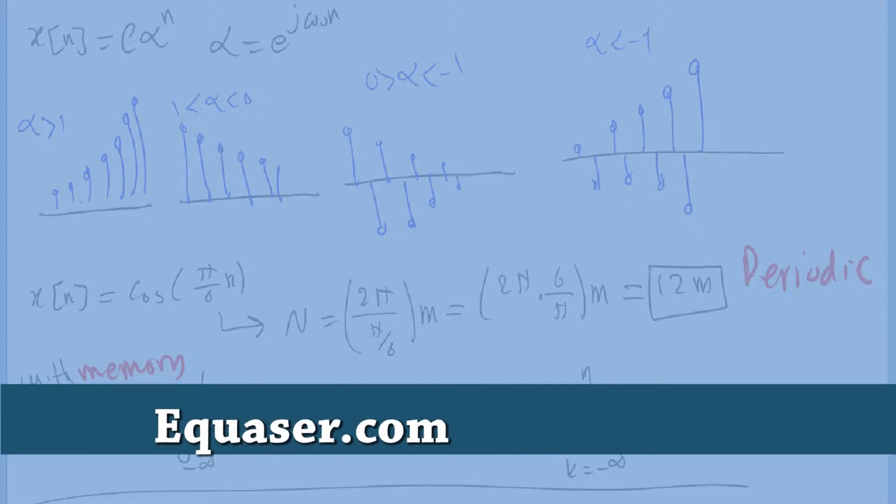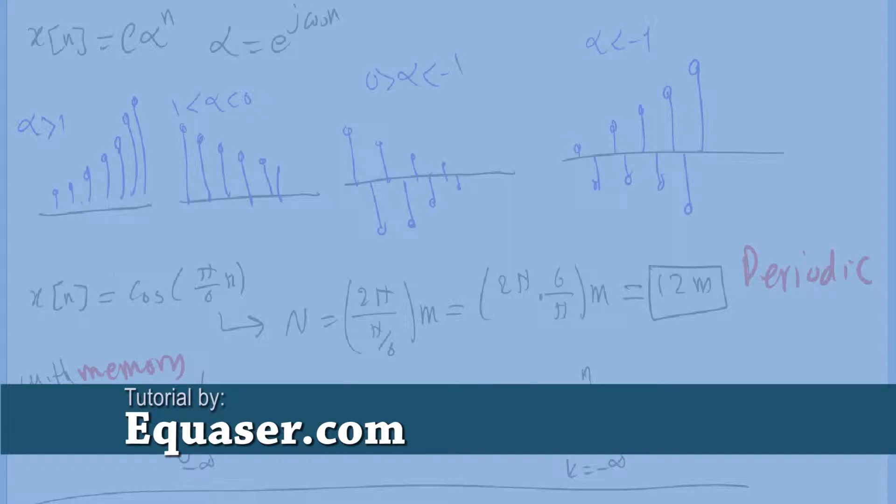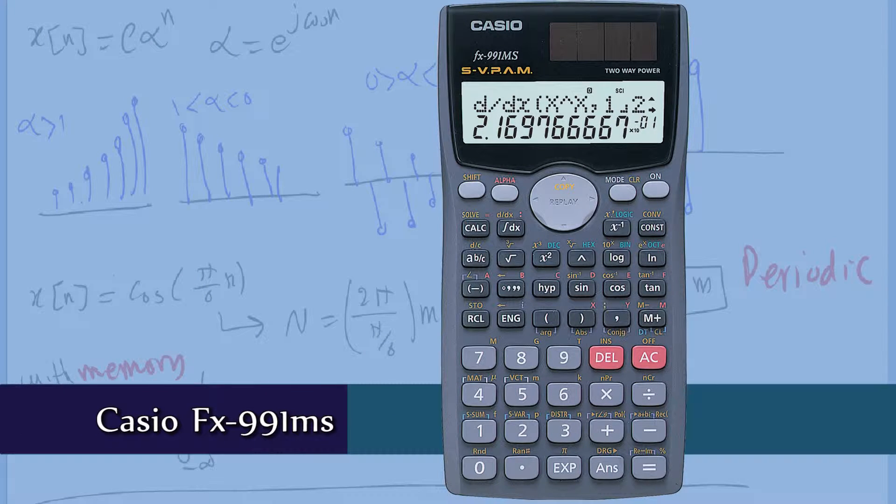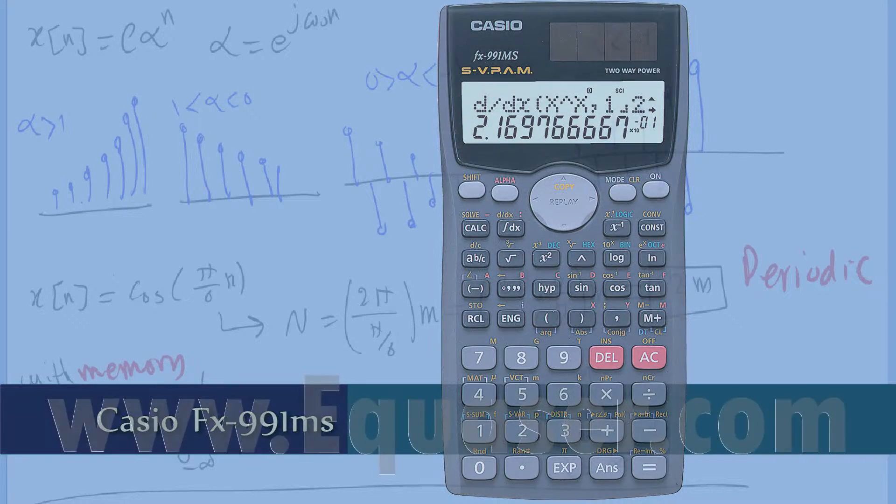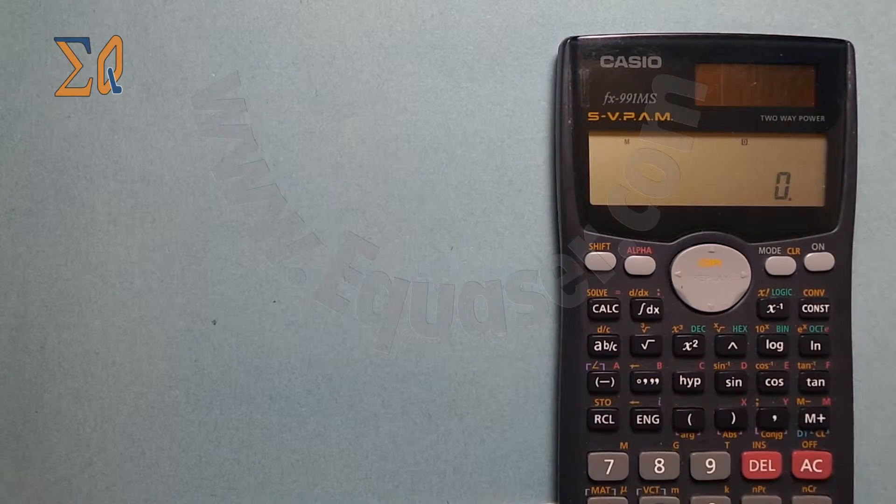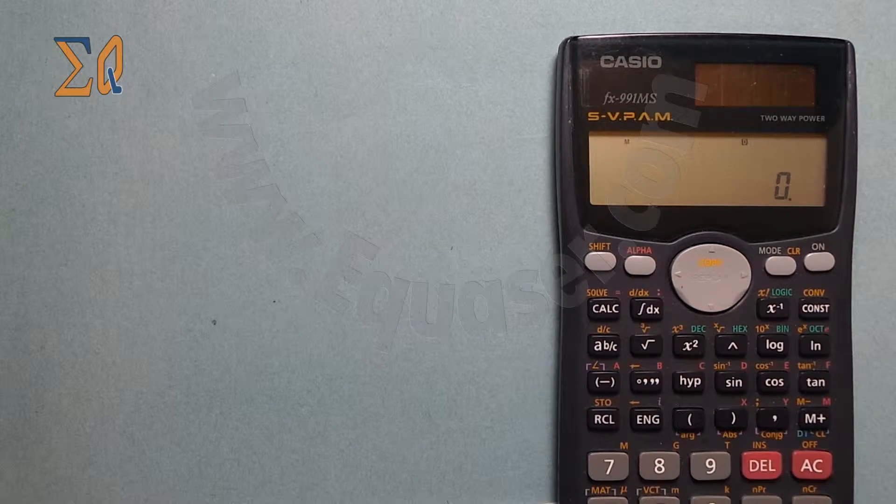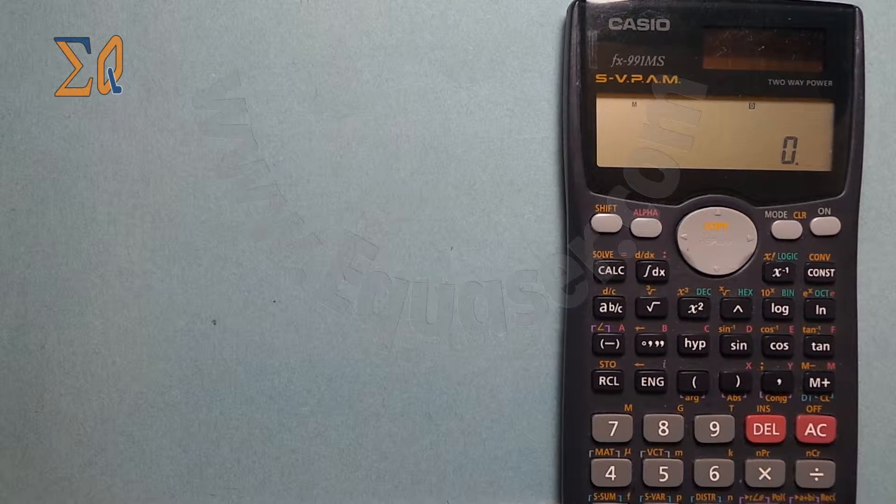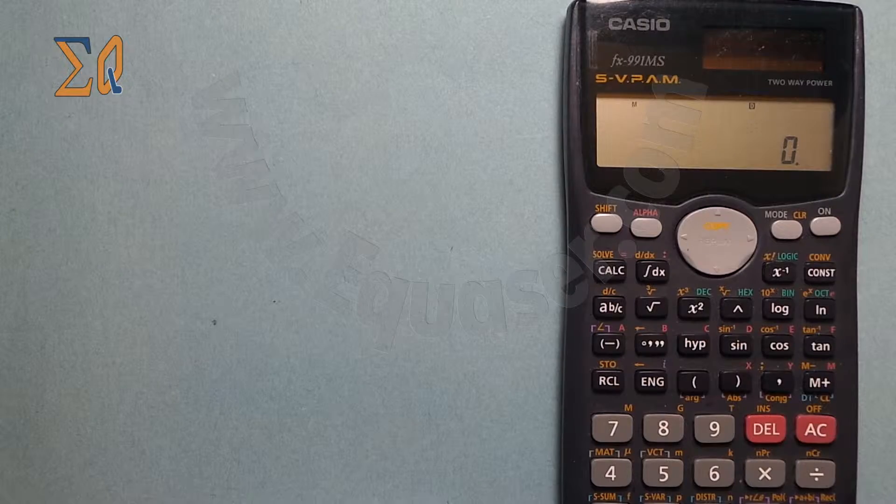Welcome to a tutorial from Equazor.com. This tutorial covers Casio's scientific calculator FX991MS. In this tutorial we are going to see how we can find a percent value for different numbers.